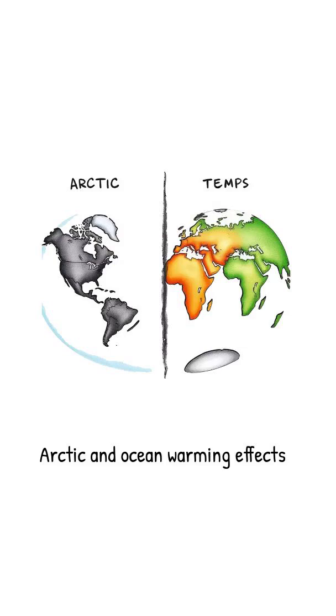Ocean warming, up 1 to 2 degrees Celsius since 1950, reduces tropical to polar water gradients by 1 to 2 degrees Celsius. This slows air and water flow.